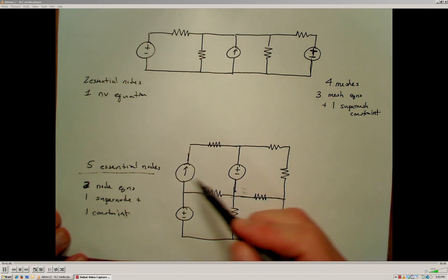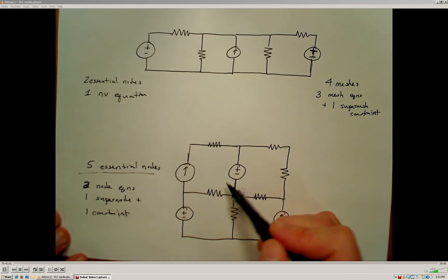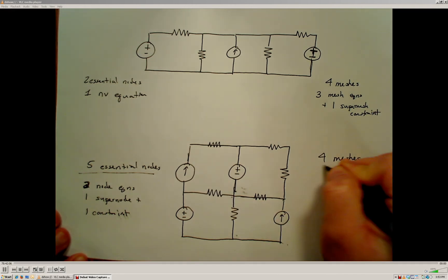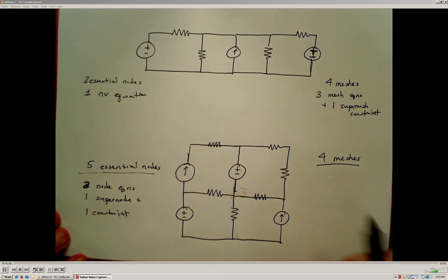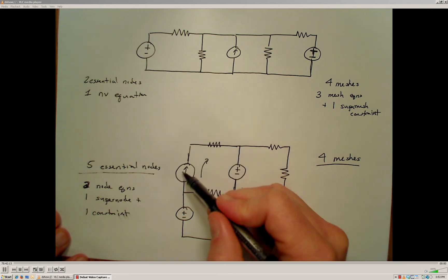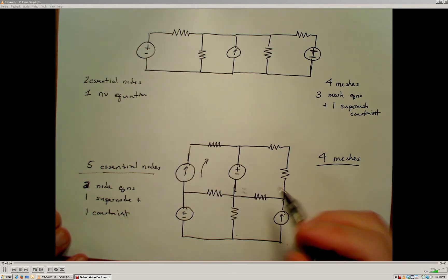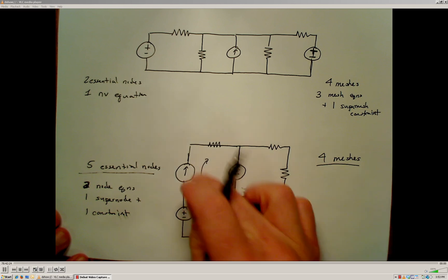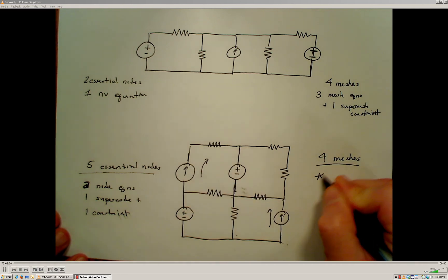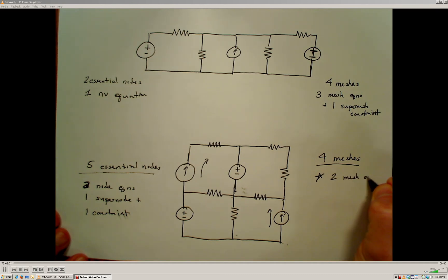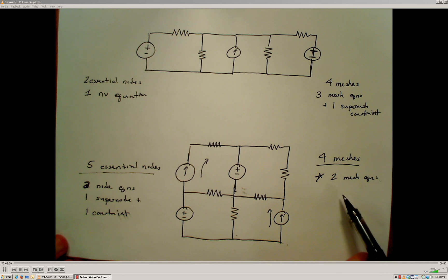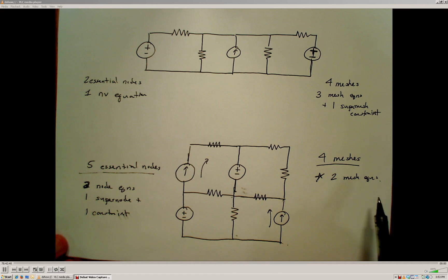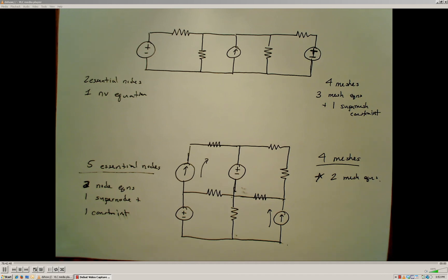If we look at the meshes for this circuit, we have four meshes which would normally require four independent equations. However there's a current supply in one mesh that is not shared between any other meshes, so we already know the mesh current for those meshes. In essence we only need to solve two mesh equations — fewer than the four needed for node voltage. So we're less prone to making errors, and this is the approach I would take for determining which method is the best solution for a given circuit.